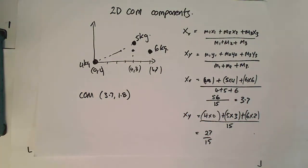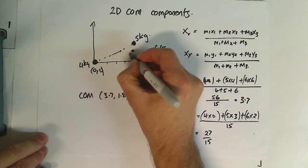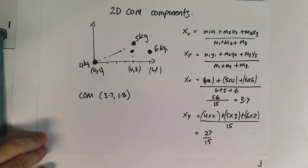That's the component method for finding center of mass, and what we've ended up getting is the components of this center of mass, and the mass at that point would be 15 kgs at that point there. That's the component method.